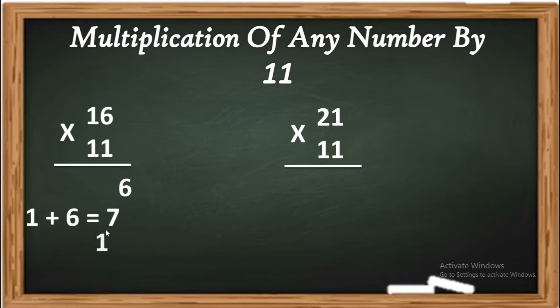At left side leave another space in third line and write 1 as it is and add them. 1, 7, 6. The final answer is 176. 16 into 11 is 176.